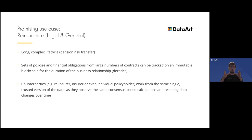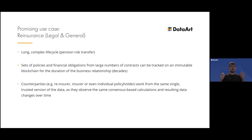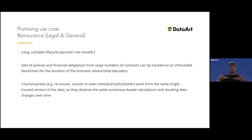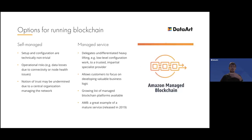A promising use case is reinsurance and the business of Legal & General. The pension risk transfer process can take more than a decade — it involves multi-party computations and underlying financial obligations that must be managed over a decade-long lifecycle. For pension risk transfer contracts, immutability and the ability to run distributed calculations right in the network is really valuable. It almost feels like blockchain and DLT as a technology was developed precisely for this case.